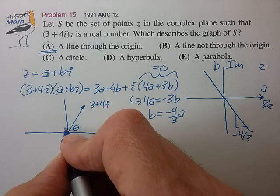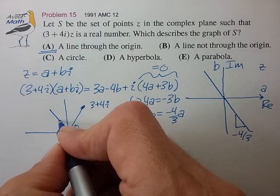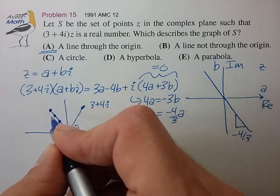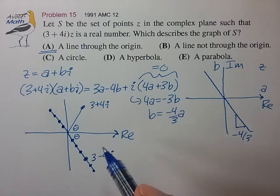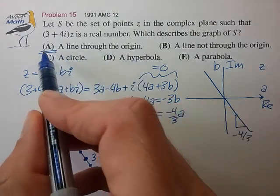And if we go through the origin, these numbers would lead to a product on the negative real axis. So this quickly identifies the answer to be a line through the origin for choice A.